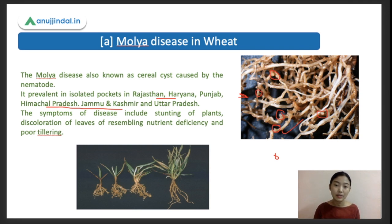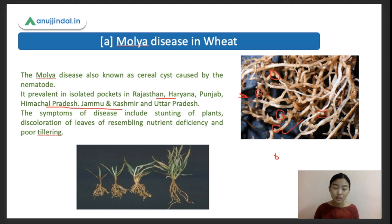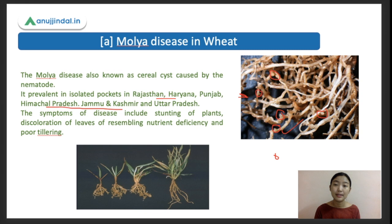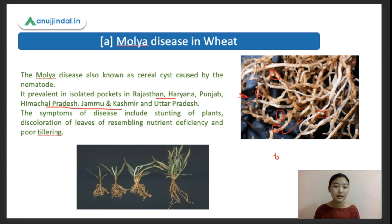Management practices include rotation of the wheat crop with non-host crops such as turnip, carrot, radish, and marigold. Marigold is very effective against these nematodes - remember that. We can also rotate with non-host plants. These are the key points about the Moller disease of wheat.